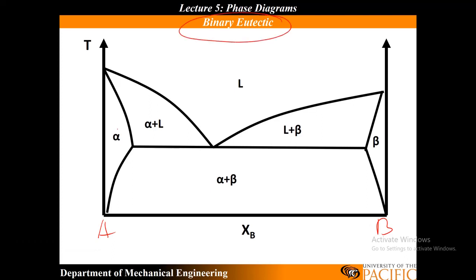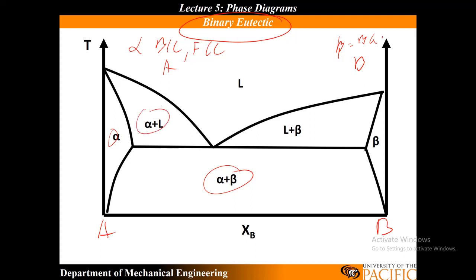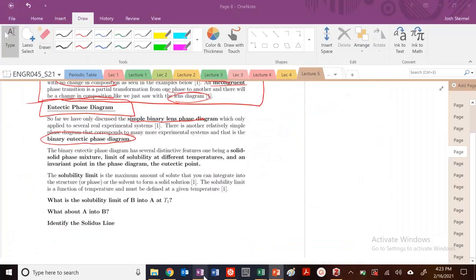We have a pure phase region of A — basically A in the alpha phase, which could be BCC, FCC, whatever structure A is. Beta, similarly, is BCC, FCC, or whatever structure B is. We also have this solid solution region of alpha plus beta, a liquidus line with an alpha plus liquid two-phase region and another liquidus line on the other side. This line here is our liquidus, and this would be our solidus line. We have this solid-solid phase mixture region.